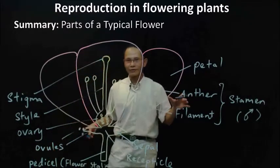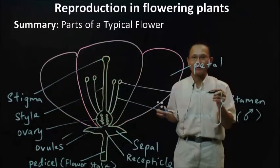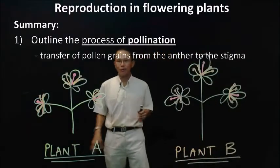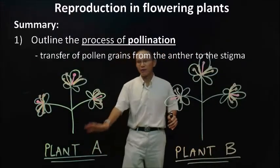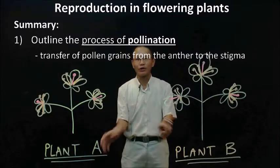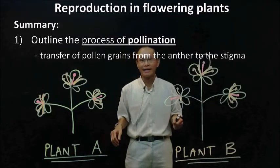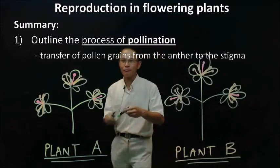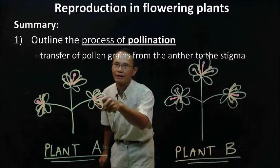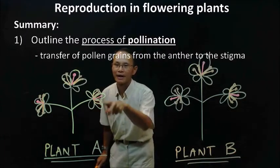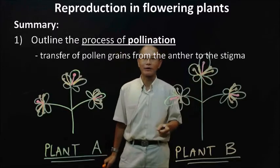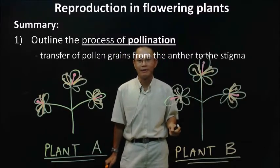So these are the basic parts of the flowers. Now, assuming that we have plant A and plant B — both are not connected in any way — this pink structure represents the carpel, and the orange structure represents the stamen.